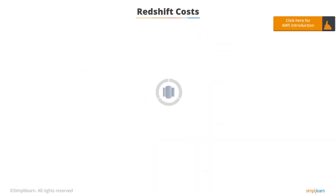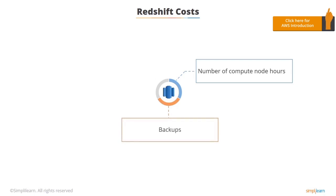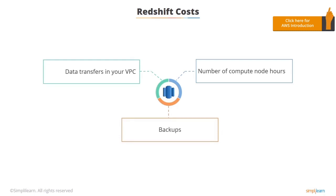Looking at the costs associated with Redshift: firstly, you're charged for the number of compute node hours that you use, and that doesn't include the leader node — the leader node is not a chargeable node. You'll also be charged for the backups that you store and any data transfers within your VPC. You're not charged for any transfers outside of the VPC.